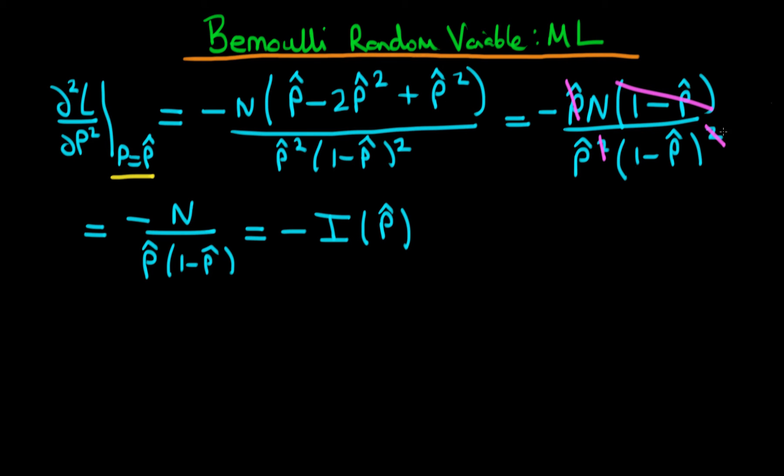Hence, we have in this particular circumstance that I of P-hat, or the inverse of the information matrix rather, is just simply this thing going to be flipped after we've taken away the minus sign. So it's just going to be P-hat times 1 minus P-hat all divided through by N.